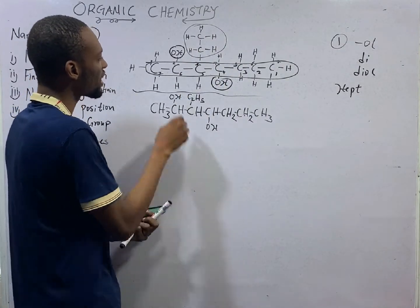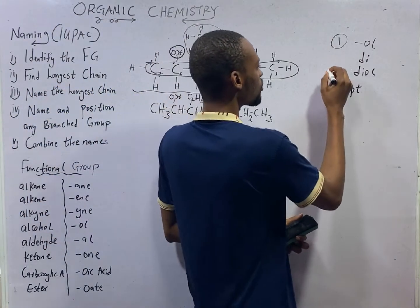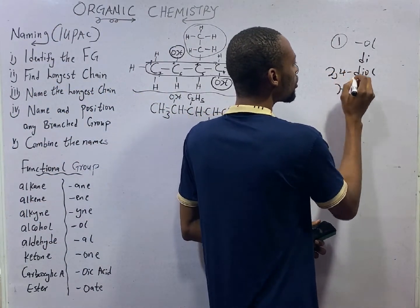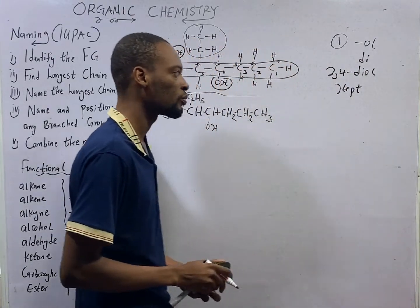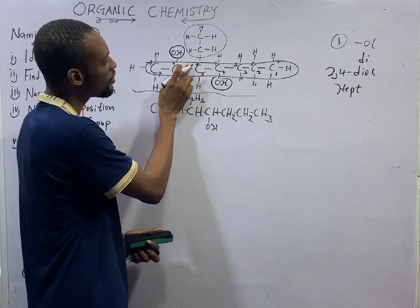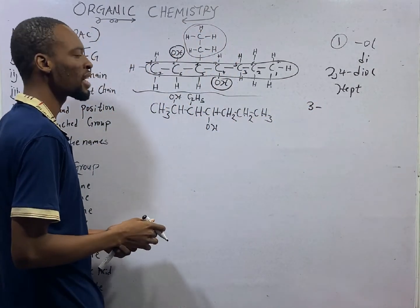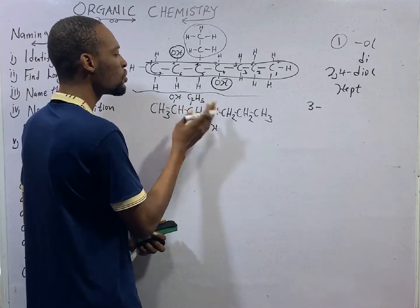The functional groups are in carbon 2 and carbon 4. That will simply be 2,4-diol. The branch is in carbon 3. So, 3. What is the branch name? This is C2H5.